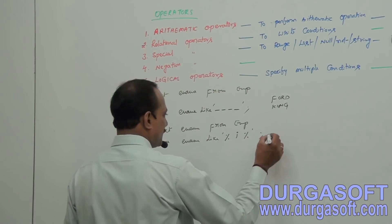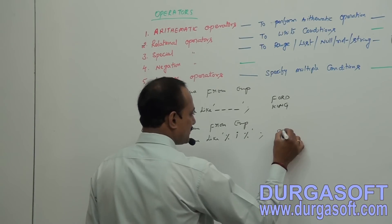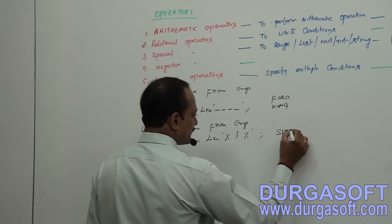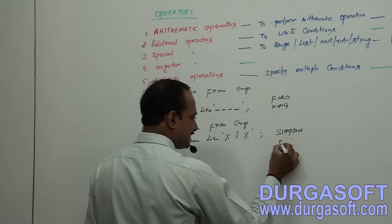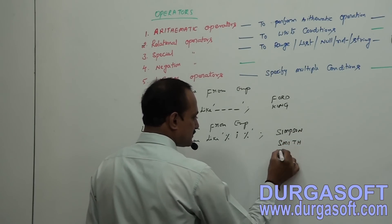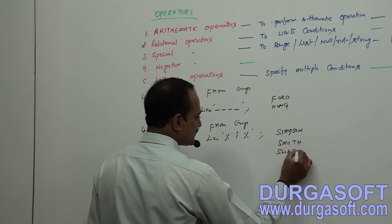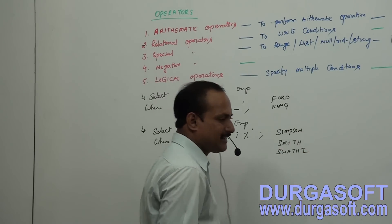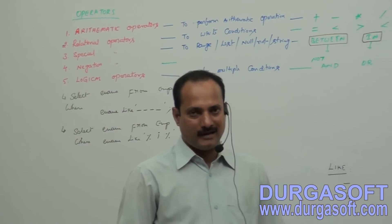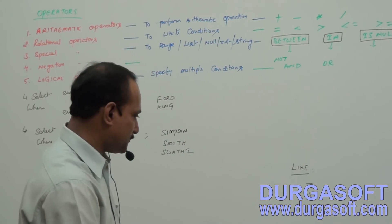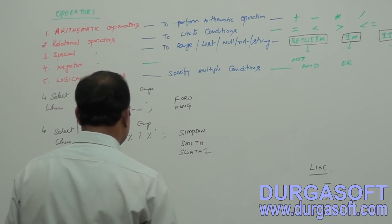Here it will display values like Simpson, Smith, Swathi — yes, it will display all values. The I position can be anywhere: in the middle of the name, at the beginning of the name, or at the end of the name. It won't bother about the position of I.